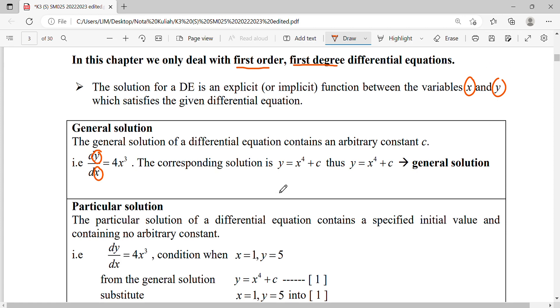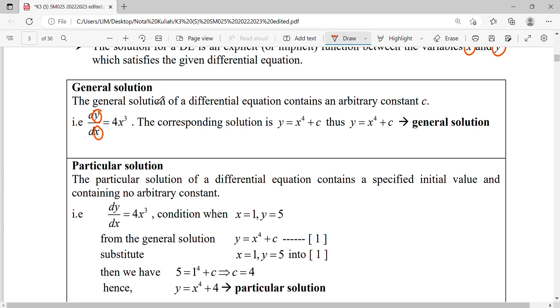We have two types of solutions. The general solution is y equals our equation in terms of the constant c that we haven't found yet.